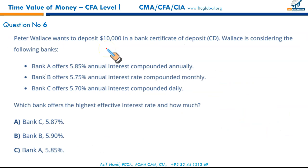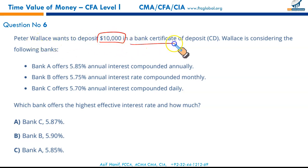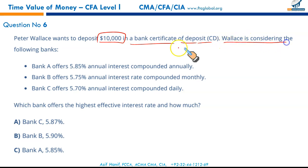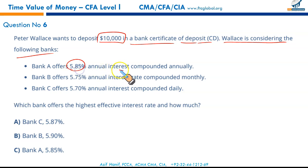The future value of these uneven cash flows is $5,346. Gentlemen — speed and accuracy, that's what you need in professional certifications. Peter Wallace wants to deposit $10,000 in a bank certificate of deposit. He is considering: Bank A offering 5.85% annual interest compounded annually.